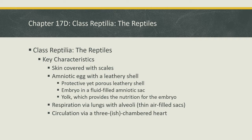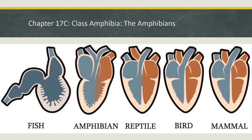So we have skin covered in scales, an amniotic egg with a leathery shell, and then respiration via lungs with alveoli — those are thin, air-filled sacs. So we have lungs starting to look more similar to human lungs. They breathe via lungs, and then they have circulation via a three-ish chambered heart. It's technically a three-chambered heart, but there is a partial wall that separates the one big chamber into almost two separate chambers. I have a picture here.